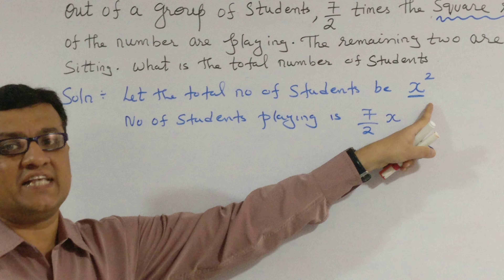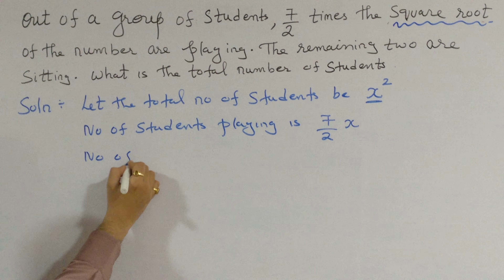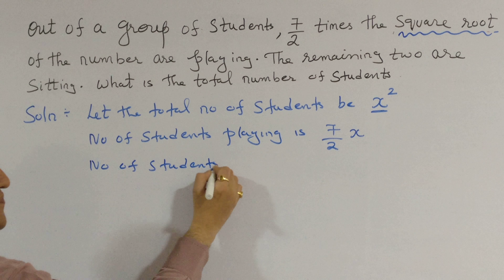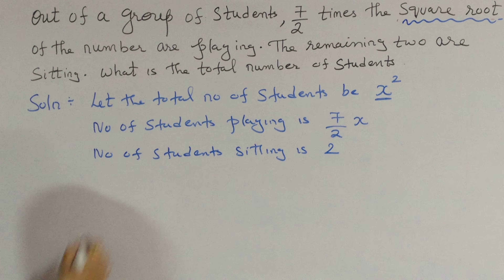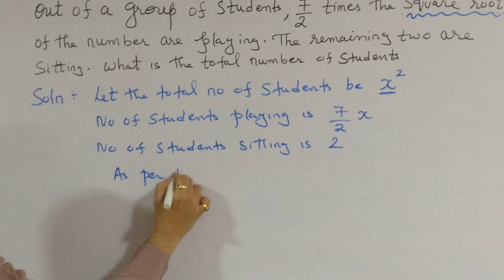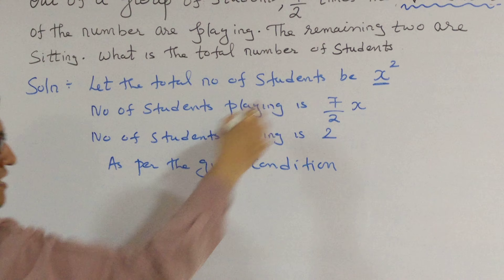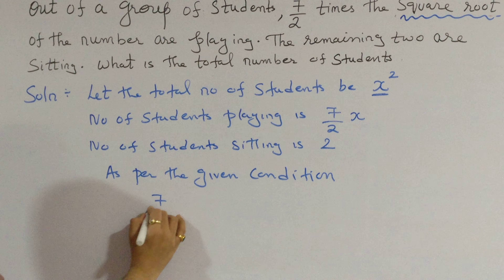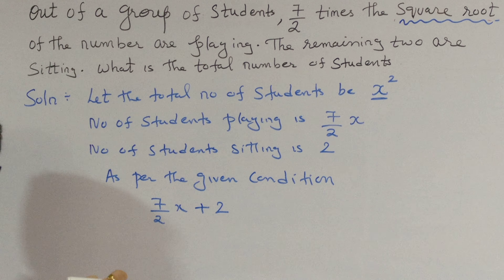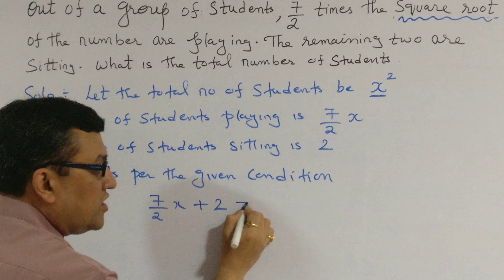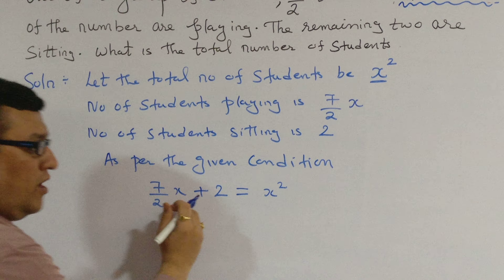Did you understand why we took x²? So that the square root of x² turns out to be x — that was the reason we went for x² instead of x. The next condition: the remaining two are sitting, so the number of students sitting is 2. Now we frame the equation: students playing (7/2)x plus students sitting 2 must combine to give the total number of students, which is x².